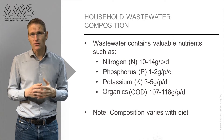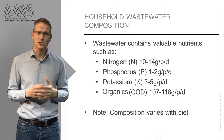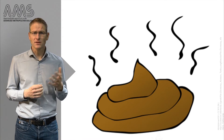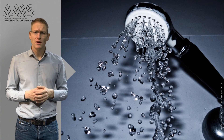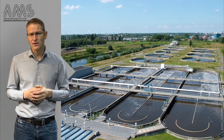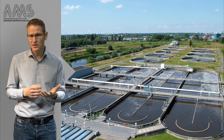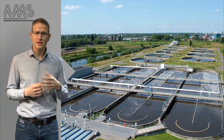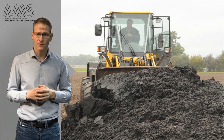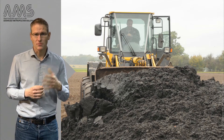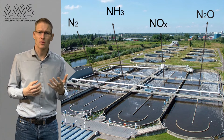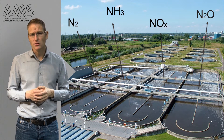Currently this household waste is mainly collected as so-called municipal sewage, where urine, feces, and water from the kitchen and shower are mixed together. Mostly this wastewater is then treated to remove the nutrients from the wastewater. In this process some of the nutrients such as phosphorus and potassium end up in the solid fraction, the sludge, while the majority of nitrogen is emitted to the air in various forms, some of which enhance climate change or air pollution.